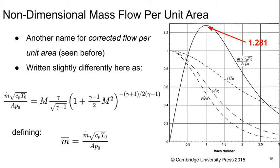So to try to quantify this behavior more carefully and figure out how much flow can fit, we want to introduce a non-dimensional mass flow per unit area. This is just another name for the corrected flow per unit area, which you've seen the corrected flow equation before. But we're going to think about this a lot more in this part of the course than we have previously.